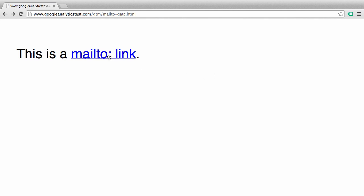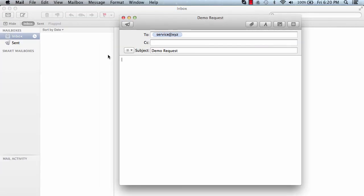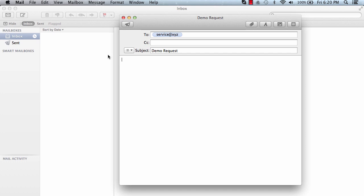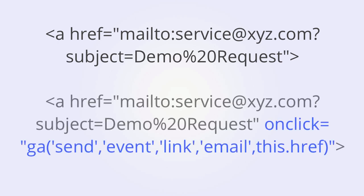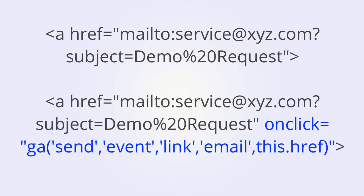So here, my email client has opened up, but this action has not been tracked in Google Analytics. Here's how the mail to link looks before any event tracking is added. And here's the link with event tracking added. The code for event tracking itself is very simple, but here's the potential problem.